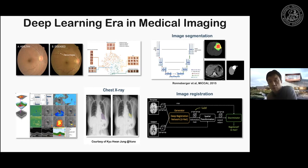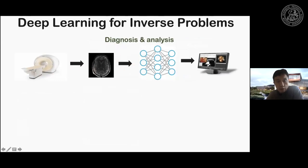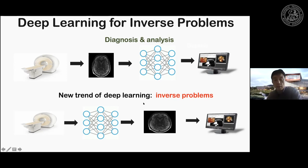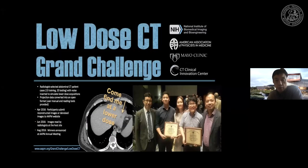Deep learning is state of the art for various image processing tasks such as segmentation and image registration. The new trend of deep learning is actually for the inverse problem or image reconstruction — from the sensor data we are interested in forming high-resolution, high-sensitivity images using deep neural networks. We are quite proud that we are one of the pioneers in this area. In 2016, at the AAPM Low-Dose CT Grand Challenge, we proposed the world's first deep learning approach for low-dose CT reconstruction.